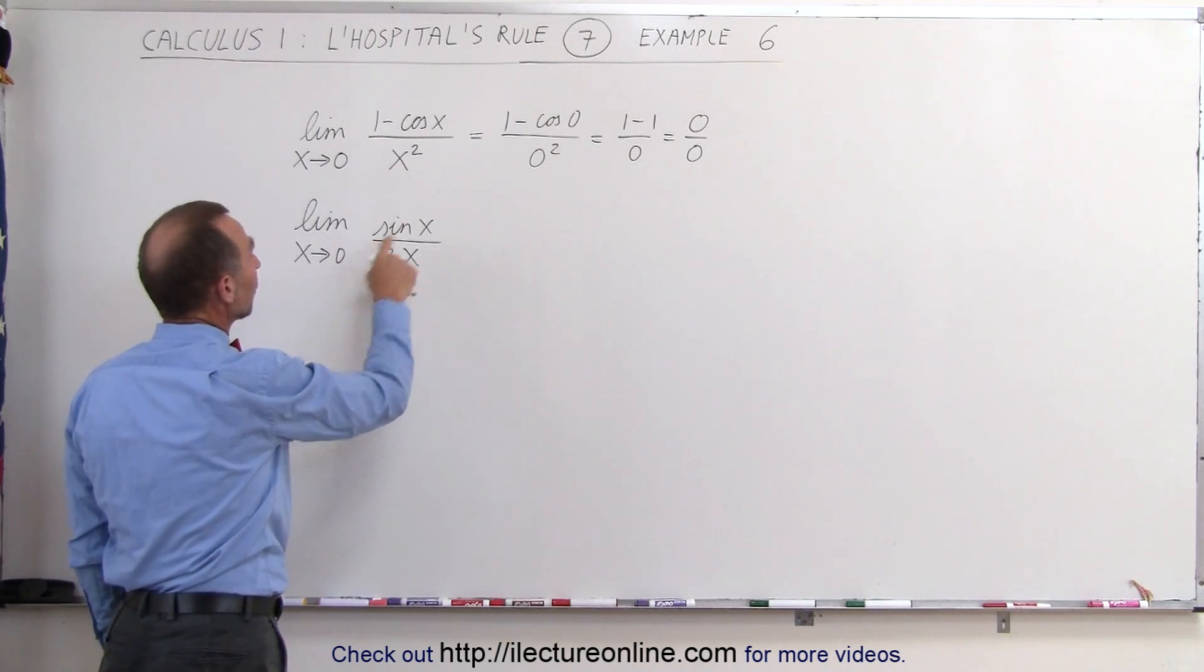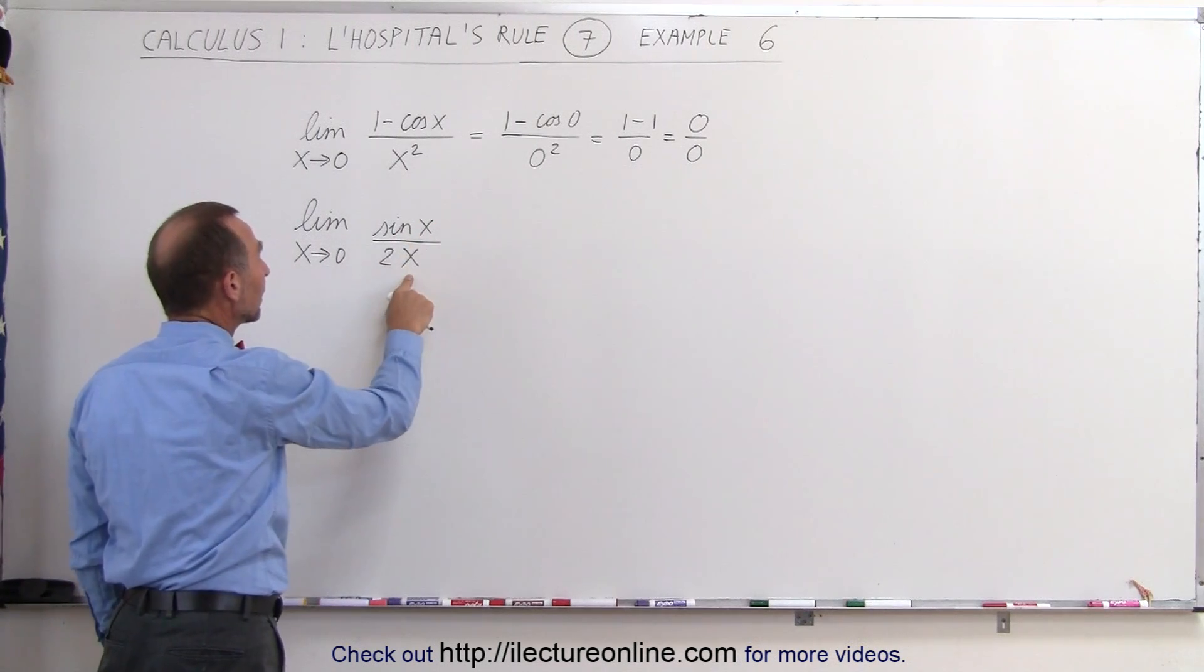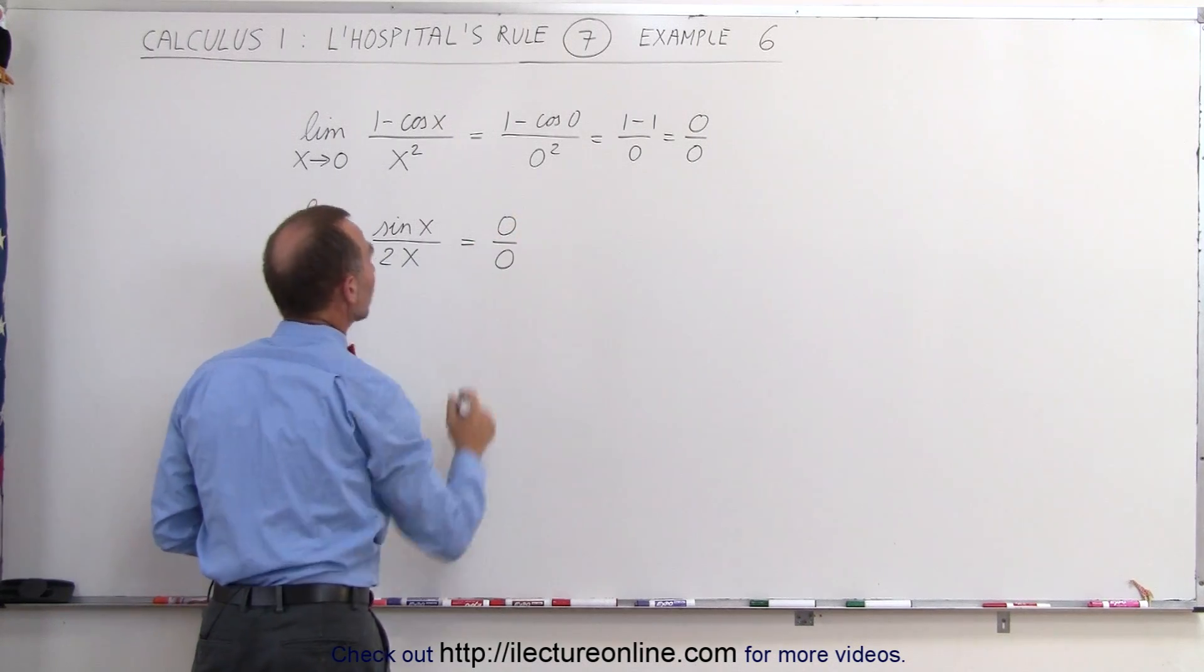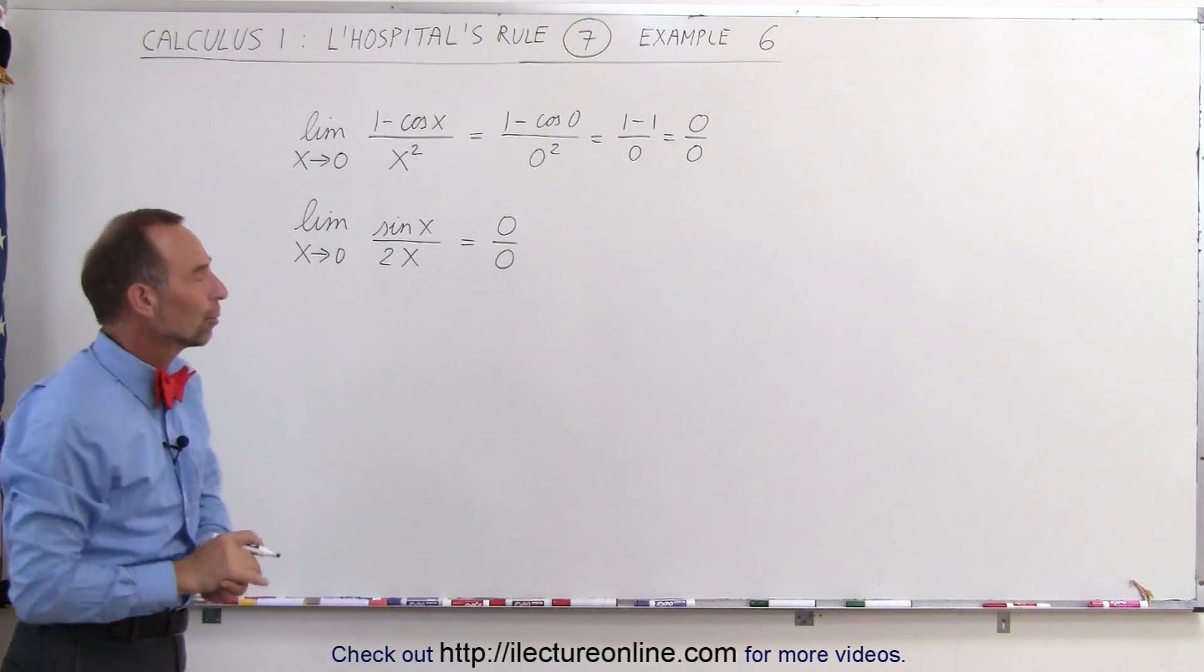Now, when we plug in the limit, notice that the numerator becomes 0 and the denominator becomes 0 again. This gives us a 0 divided by 0 condition. Again, it's an indeterminate form.